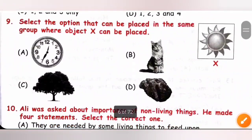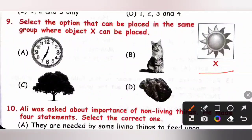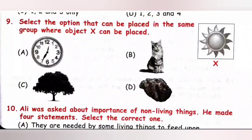Question 9: Select the option that can be placed in the same group as object X. Object X is sand, which is a natural non-living thing. Option A: clock — man-made non-living thing. Option B: cat — living thing. Option C: tree — living thing. Option D: rock — natural non-living thing. So option D is the correct answer.